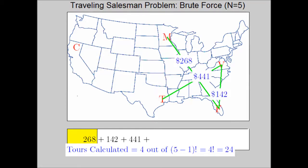The brute force algorithm considers all of these tours and calculates the cost of every one of them.